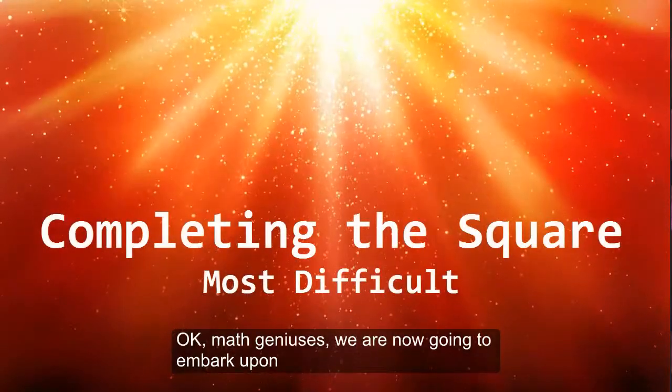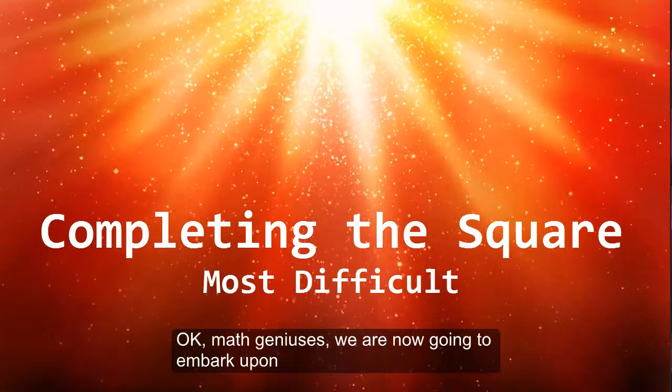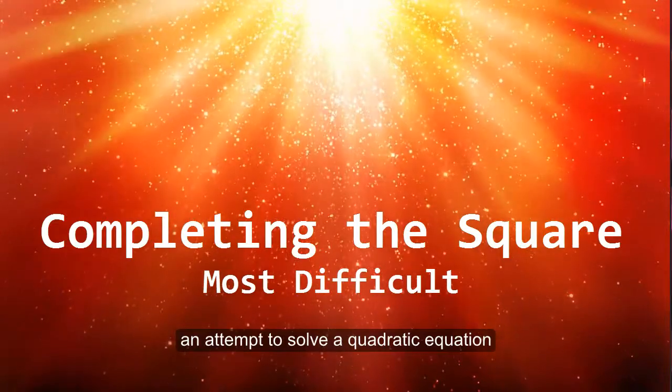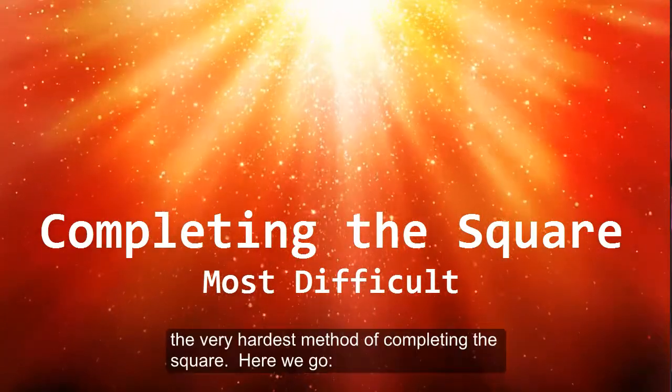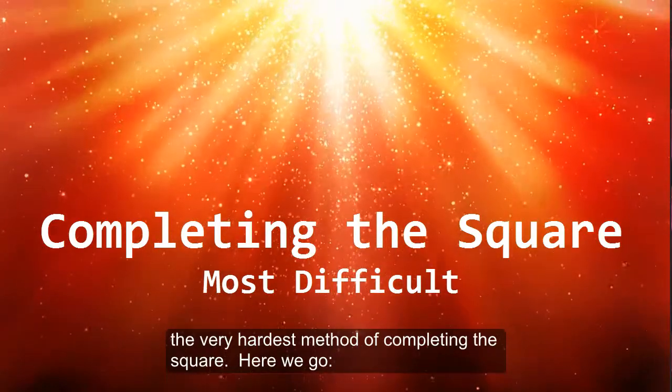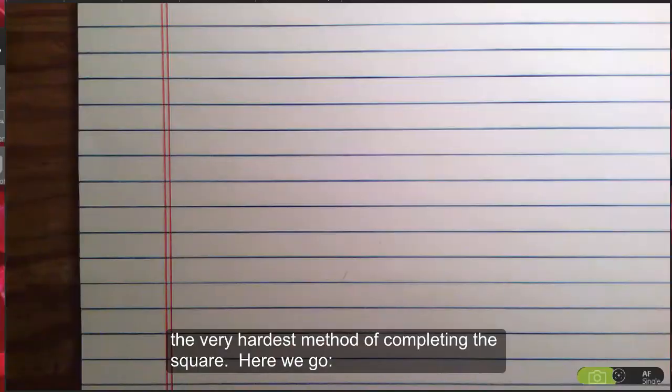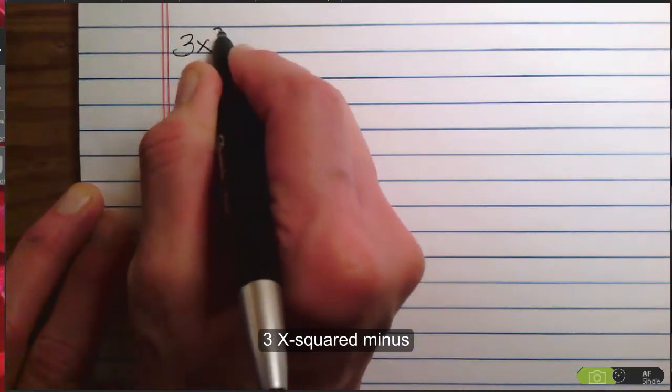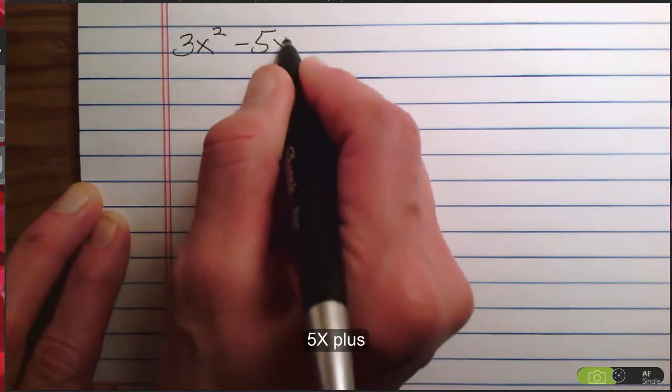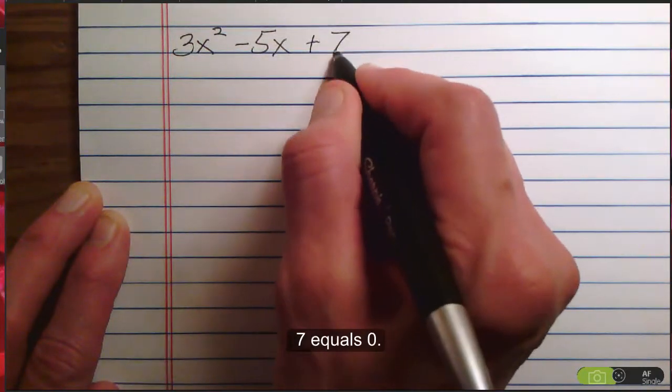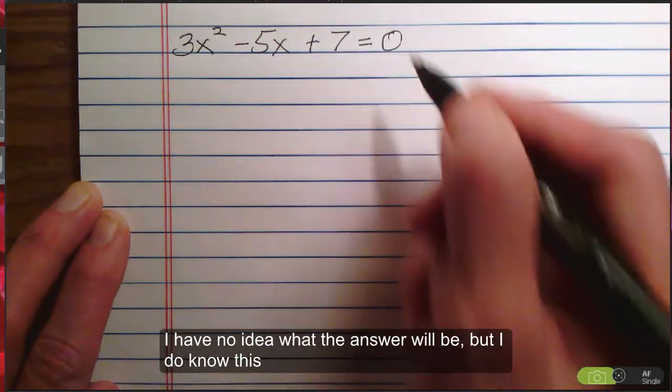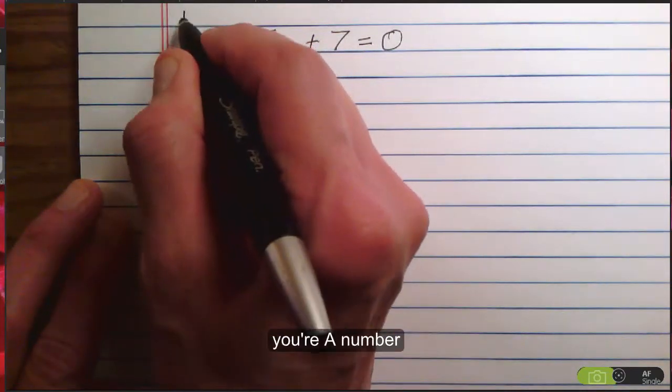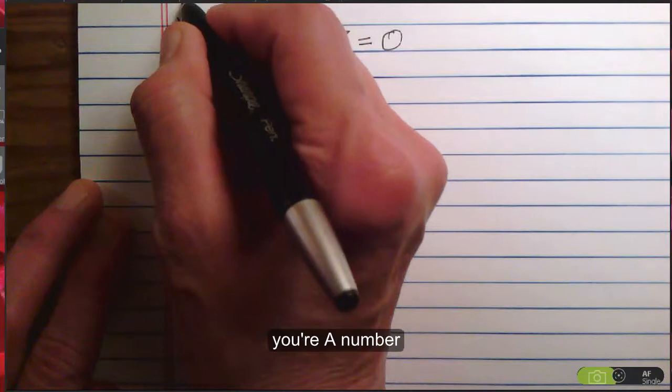Okay, math geniuses, we are now going to embark upon an attempt to solve a quadratic equation that will necessitate the very hardest method of completing the square. Here we go. 3x² - 5x + 7 = 0. I have no idea what the answer will be, but I do know this. Your A number is odd.